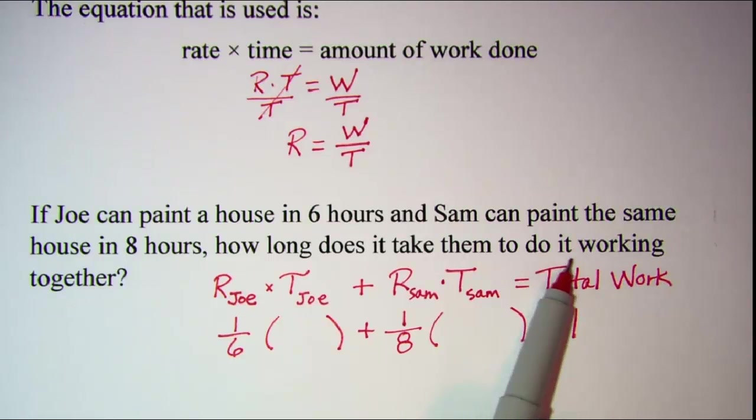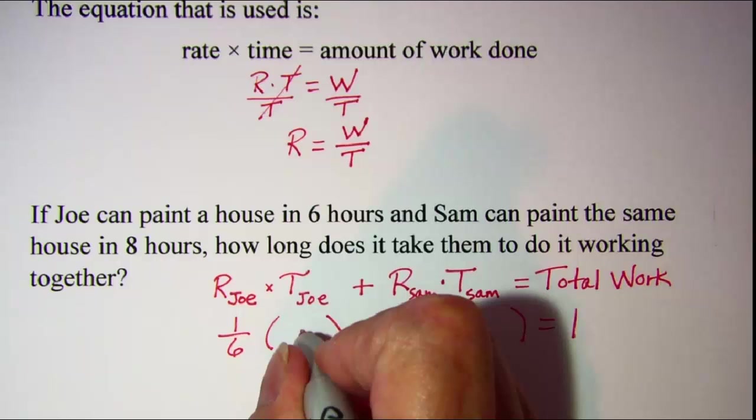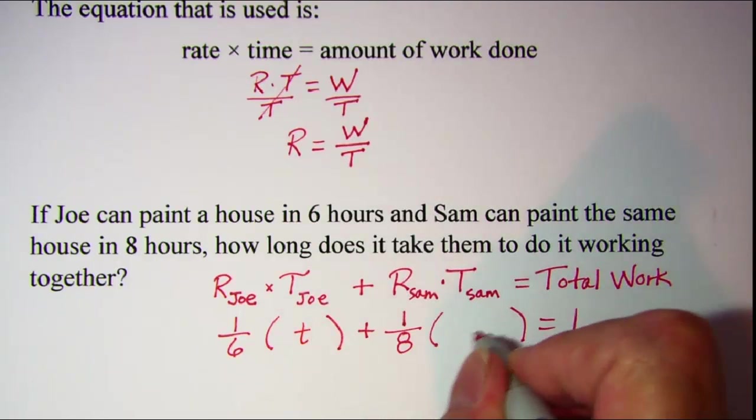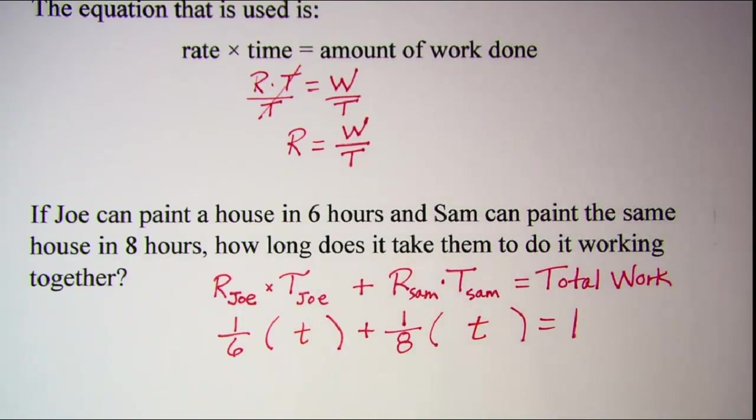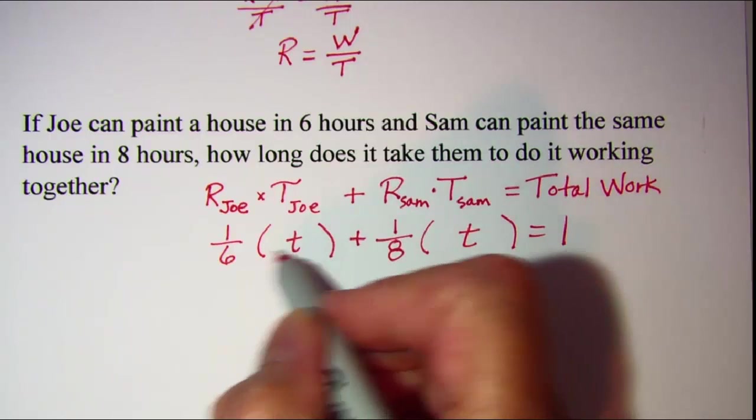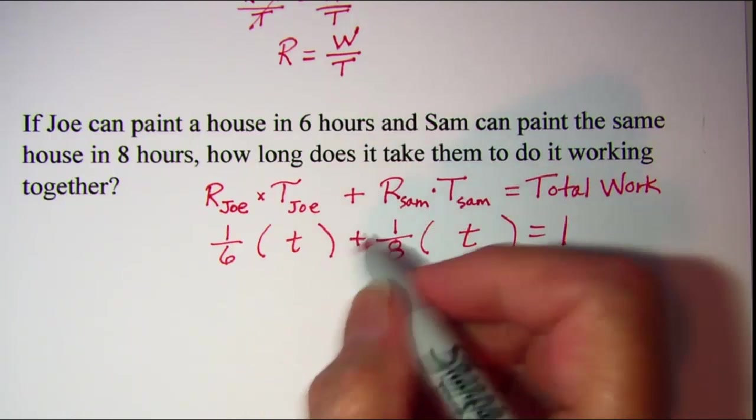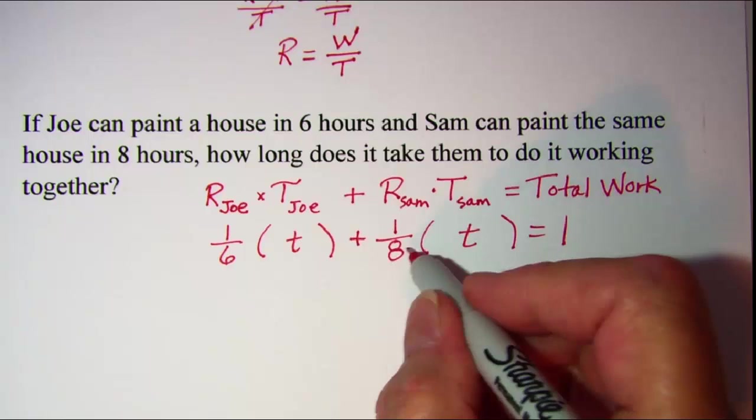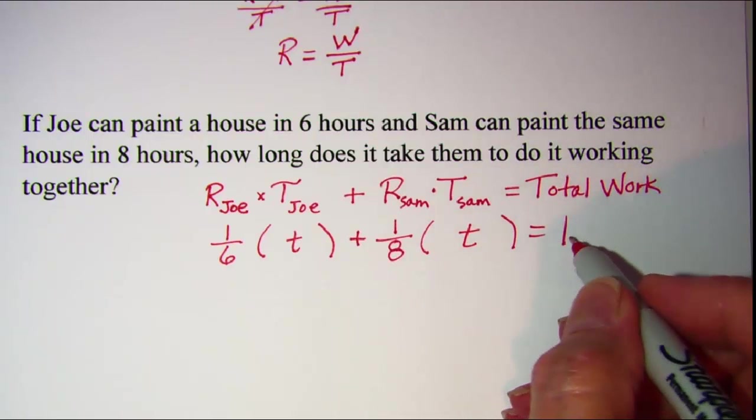We're assuming that they're starting at the same time and finishing at the same time because they're working together. So we'll just let the time for both men be t. So what we have then is one-sixth t plus one-eighth t equals one.